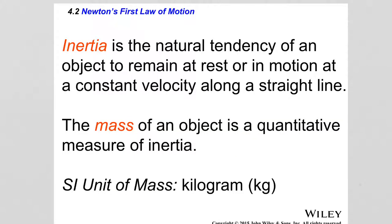A quantity related to the willingness of objects to change the state of their motion is inertia. Inertia is the natural tendency of an object to remain at rest or in motion at a constant velocity along a straight line. A resting block doesn't want to move on its own — the only way it will move is if a net force is applied. And if the block is already in motion, it wants to keep moving on a straight line with constant speed. The only way that changes is if a net force is applied.